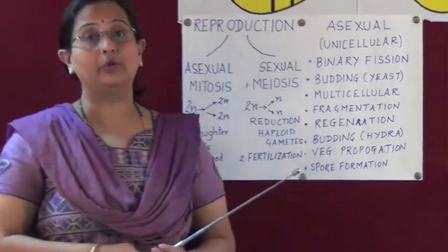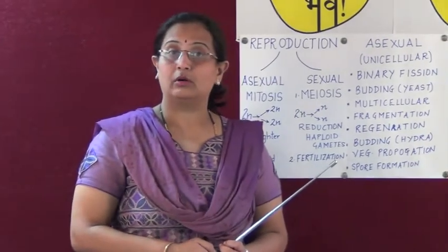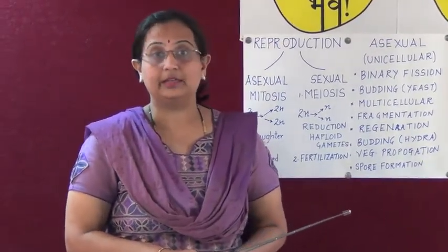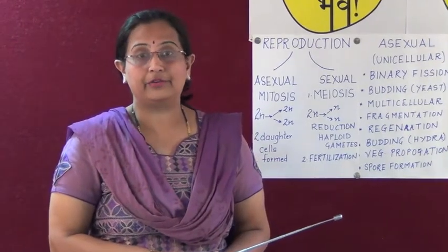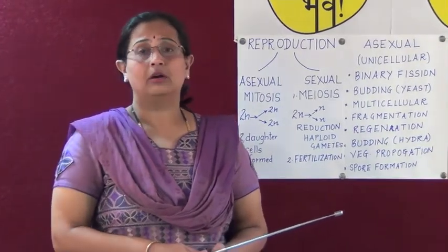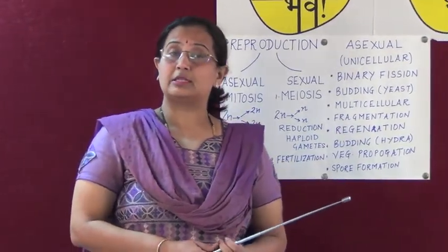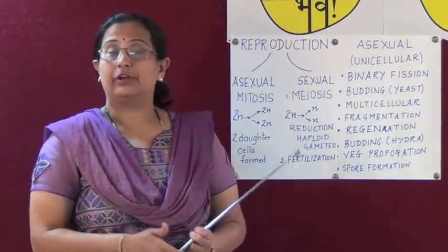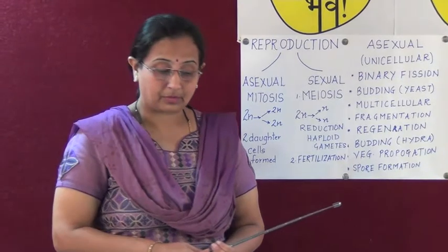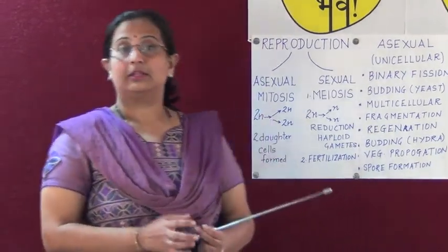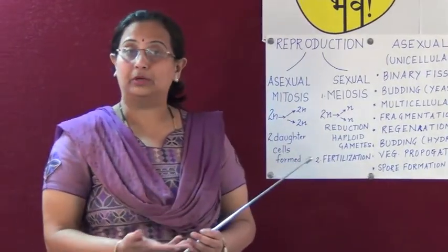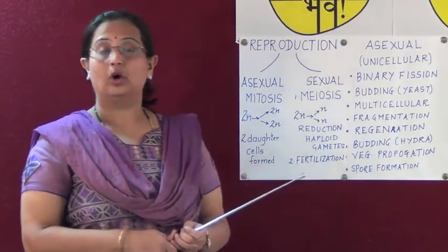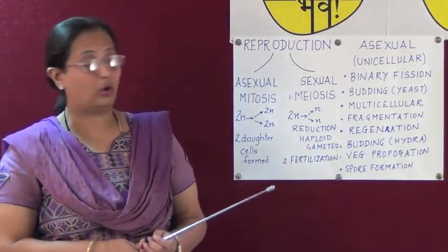Certain organisms have a high capacity for regeneration. Regeneration is the ability of an organism to produce a new individual from its own cut body parts. This is very commonly seen in planaria and hydra. In this process, specialized cells proliferate and grow in number to form body parts and help in the formation of the entire body of a new organism.